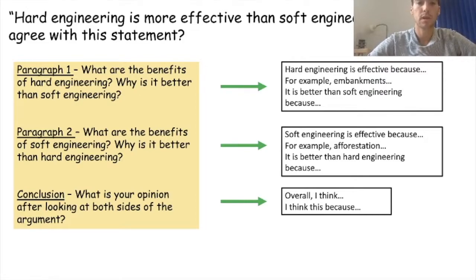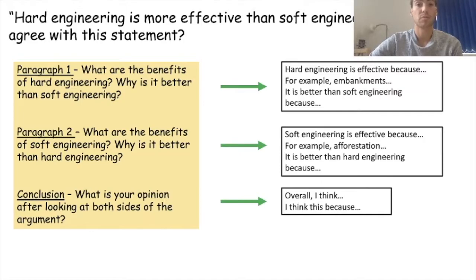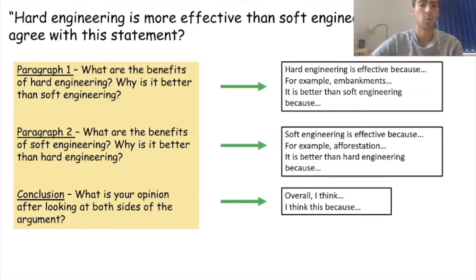Now that we've looked at some examples from the River Ribble and River Darwin, it's time to put this into practice. I want you to answer this question: 'Hard engineering is more effective than soft engineering — do you agree with this statement?' In paragraph one, write about the benefits of hard engineering using your notes from last week and extra information from today's video, and say why it's better than soft engineering. In paragraph two, write about the benefits of soft engineering and why it's better than hard engineering. So start off really balanced — one paragraph for each — and then in the conclusion give your own opinion.